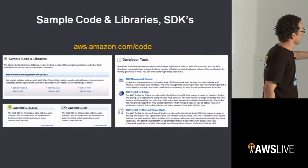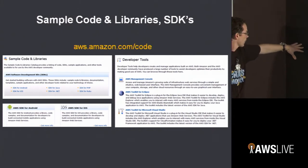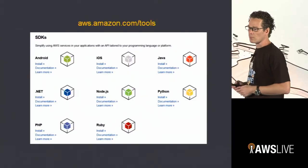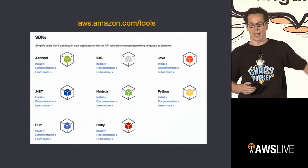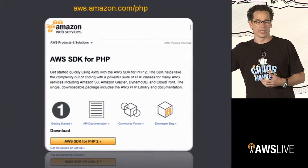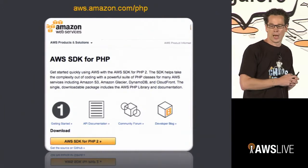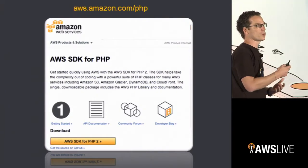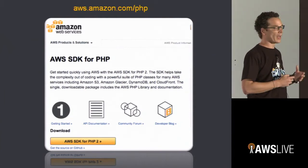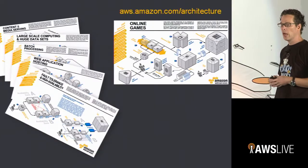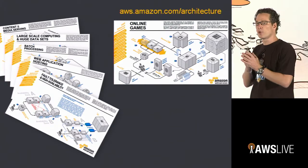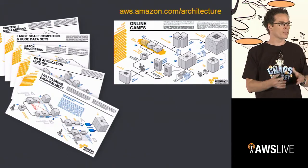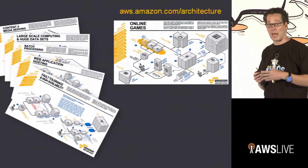If you go to aws.amazon.com/code, there's a lot of sample code and libraries available — iOS, Android, Ruby, PHP, .NET, Java, you name it. We offer SDKs for all these languages. For example, if you click on PHP, there's information to download, share with the community, forums to discuss best practices, and a developer blog. We've also worked with so many startups globally that we've identified best practices — what does your optimal architecture look like if you're a web app or a game — and published these as reference architectures on our website.